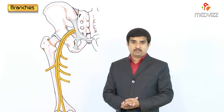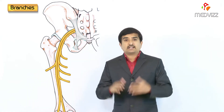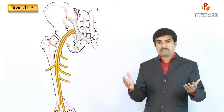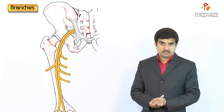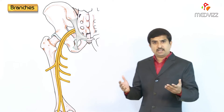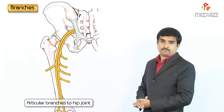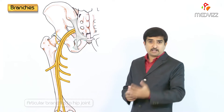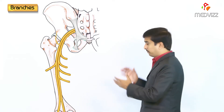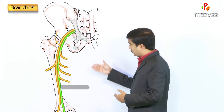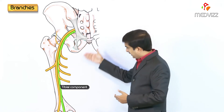Now we discuss the branches of the sciatic nerve. Like other nerves, the sciatic nerve has articular branches, mainly given to the hip joint, and muscular branches. The muscular branches need to be discussed in two parts because the sciatic nerve has a tibial component (medial) and a peroneal component (lateral).